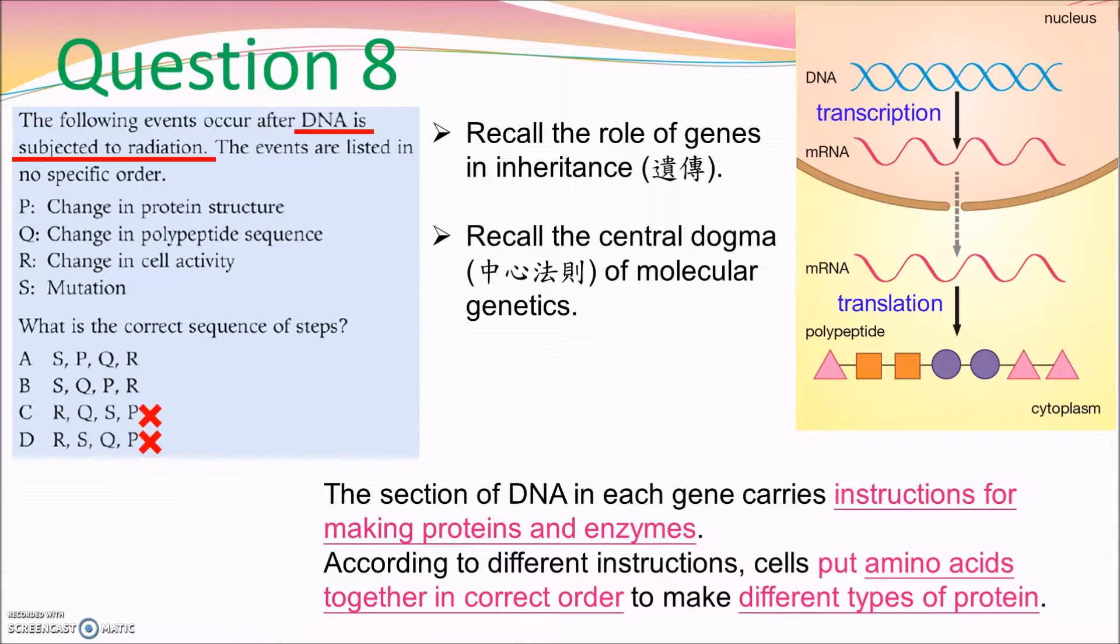So, options C and D are wrong. For options A and B, both of them start with S, mutation, and end with R, change in cell activity. That means the metabolic activity. The only difference is the order of P and Q. So, should it be the change in protein structure, and then the amino acid sequence? Or the amino acid sequence changes, and then the protein structure changes. You can recall the concept of translation. In translation, the amino acid molecules are added up one by one to become a polypeptide chain. That means a protein chain. Therefore, we line up the amino acid in a certain sequence first. And when the ribosome reaches the stop codon, the protein chain will be released to fold or to coil into a certain structure level. So, that's why answer A is also eliminated.